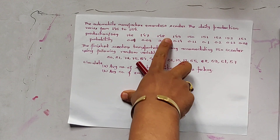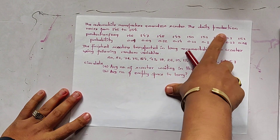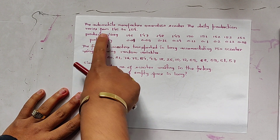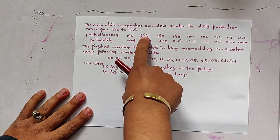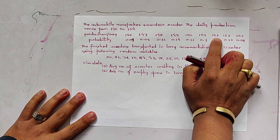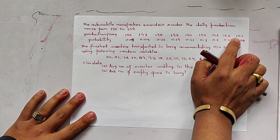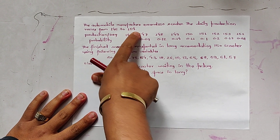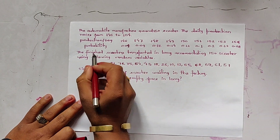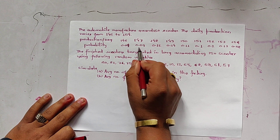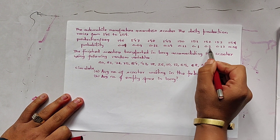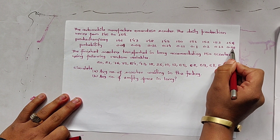An automobile manufacturer produces around 150 scooters. The daily production varies from 146 to 154. The production per day and their probabilities are: 146→0.04, 147→0.09, 148→0.12, 149→0.14, 150→0.11, 151→0.10, 152→0.20, 153→0.12, and 154→0.08.